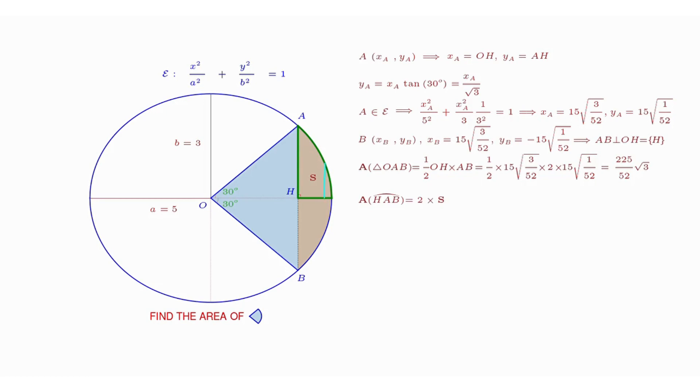Consider now a vertical section in light blue of the region surrounded by the green border. The section is located on the horizontal axis at coordinate x, has an infinitely small width dx and height y, forming a rectangle. Its area, denoted by dS, thus equals the product of y and dx, and the relationship between x and y follows the representation of the ellipse.